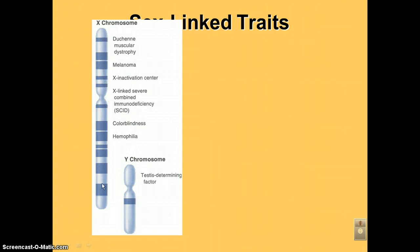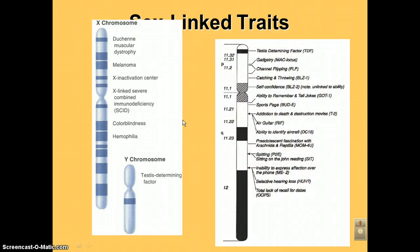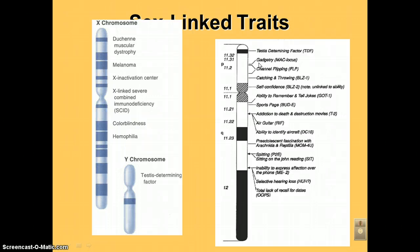Now this map of the Y chromosome has mostly made-up genes — just for fun. Think about some of the things guys do: some guys, like myself, are really into electronic gadgets, so we have a gene called the Mac Locus. Guys are notorious channel flippers, especially on Sunday and Saturday afternoons watching football, because they have the flip gene.